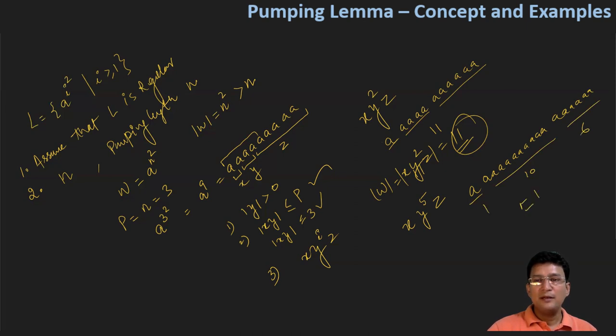So the total count is 1 plus 10 plus 6. This counting is 17, and 17 once again is not a perfect square.